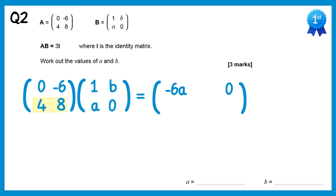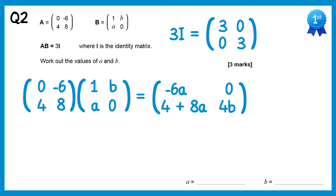We do 4, 8 with 1, a: 4 times 1 is 4, and 8 times a is 8a, so we have 4 plus 8a. And finally 4, 8 with b, 0: 4 times b is 4b, and 8 times 0 is 0, so it's just 4b. Now we're told that this matrix equals 3I — remember 3I is just the identity matrix times 3, so it's 3s on the diagonal. Since these two matrices are equal, we can compare the common elements.